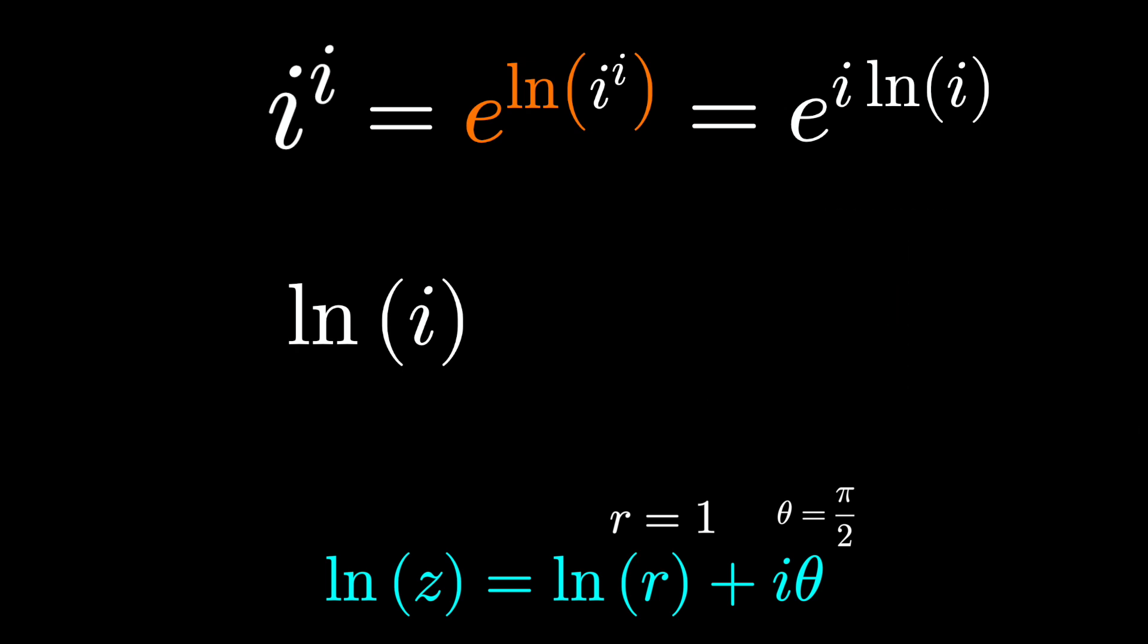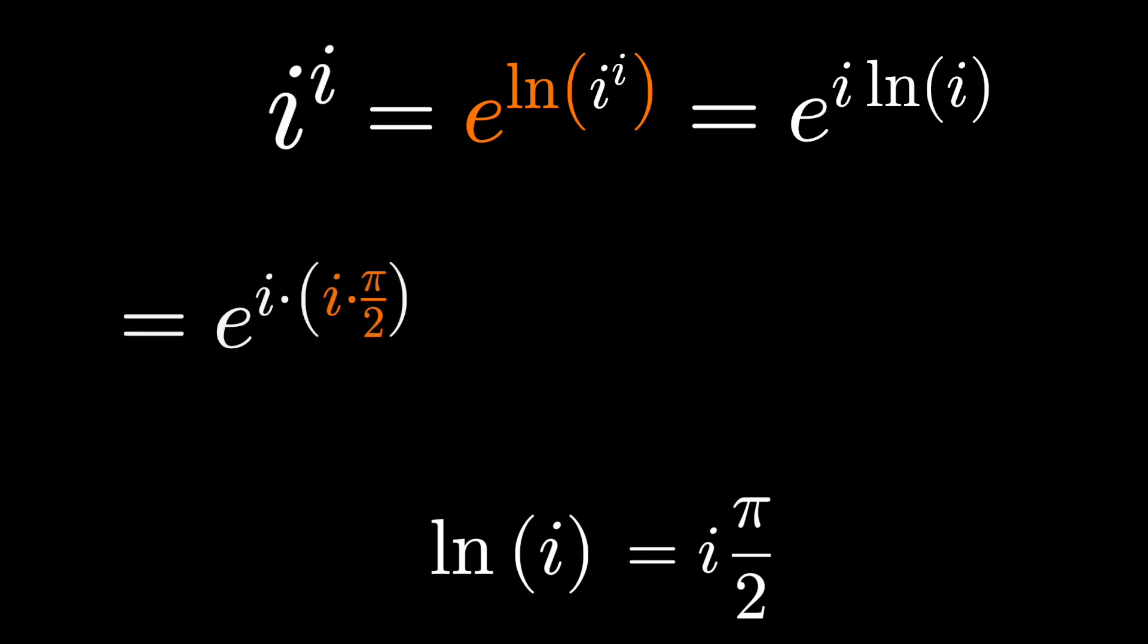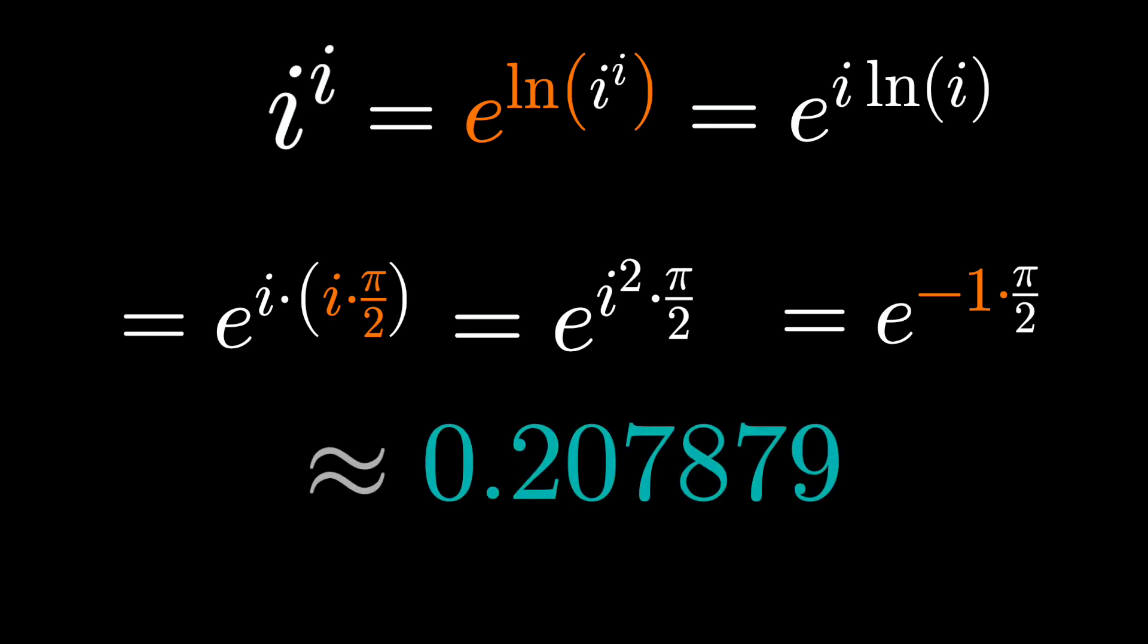Thus, natural log of i is natural log 1 plus i times pi over 2. Of course, natural log of 1 is 0, and we can answer our question. It's e to the i times i times pi over 2. By definition, i squared is negative 1, and we get i to the i is e to the minus pi over 2, a real number.